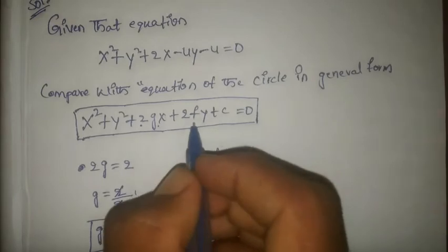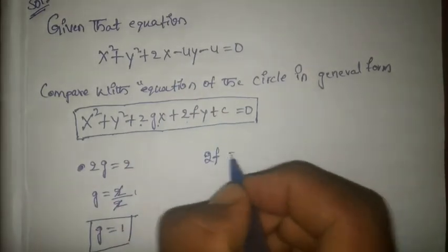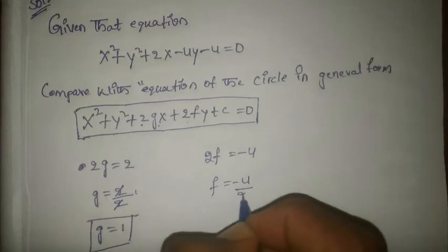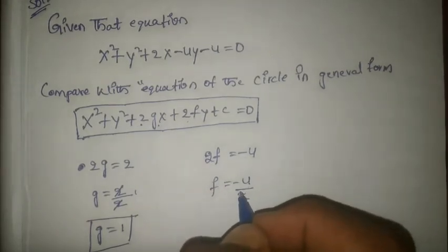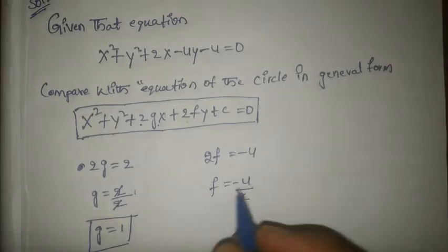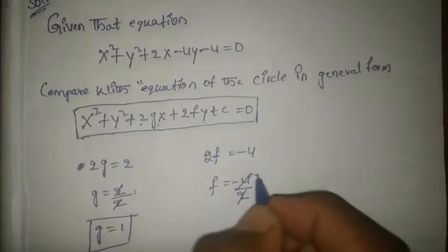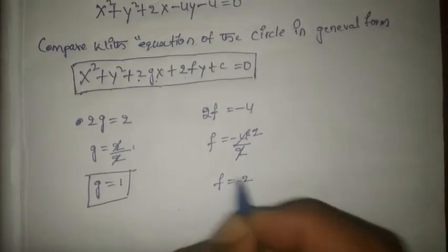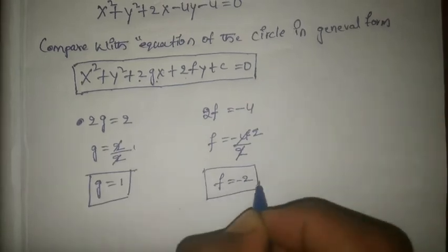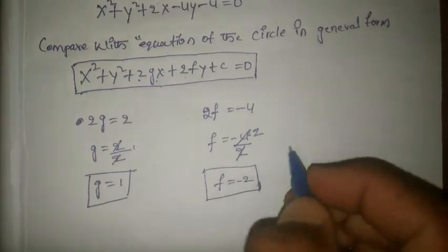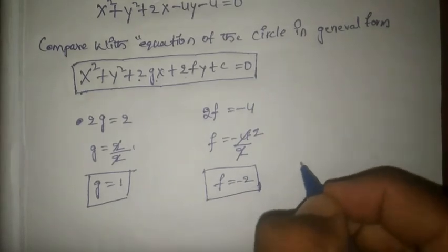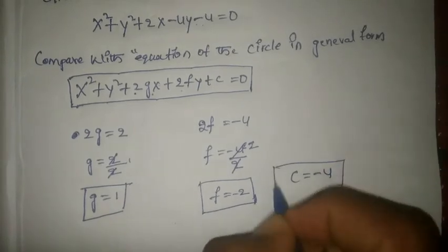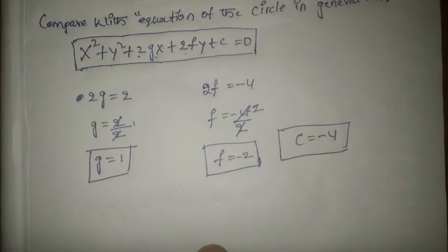And 2f = -4, so f = -4/2. When we transpose 2 to the right side it becomes division, so f = -2. And the constant c value is -4.